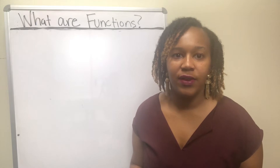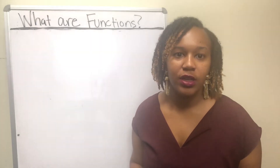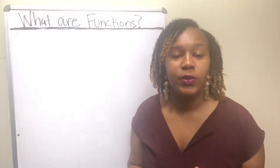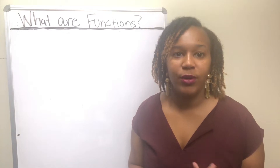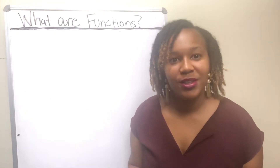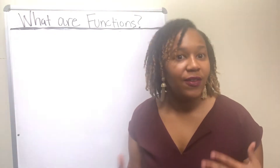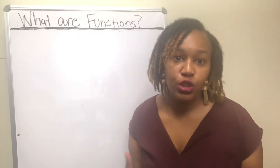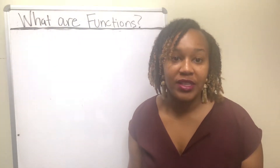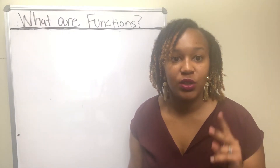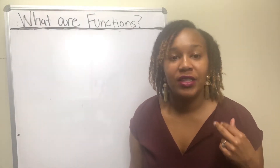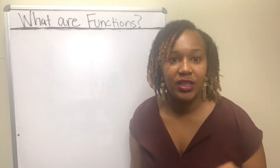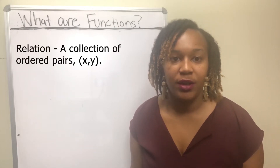So just exactly what is a function? In order to understand what a function is, you have to understand three other concepts. The first one is the concept of relations. When you think of relations, what do you think of? I think of relationships, something between two people. And that's exactly what a relation is — it's something between two things. And that's your ordered pairs, X and Y. So a relation is a collection of ordered pairs.